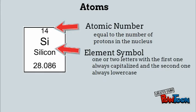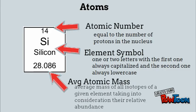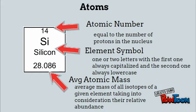The second thing that you're going to see is the element symbol. The element symbol is one or two letters with the first one always capitalized and the second one, if there is a second one, always lowercase. The last thing is the average atomic mass. The average atomic mass is the average mass of all the isotopes of a given element, taking into consideration their relative abundance. That's why you always see it as a decimal — it's just an average of all the masses of all the different types of atoms for that one element.